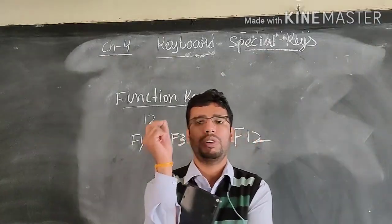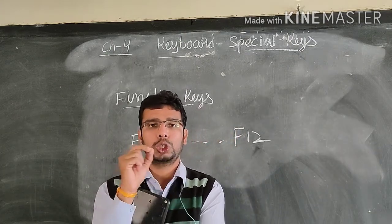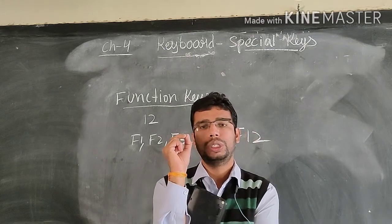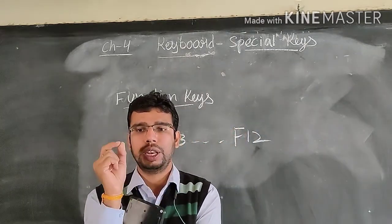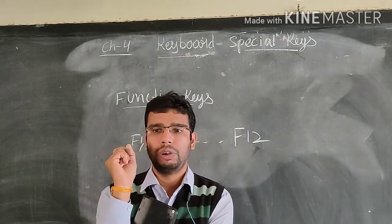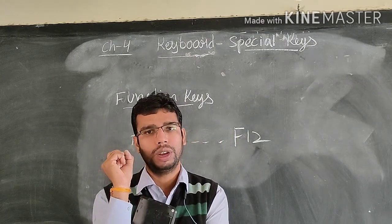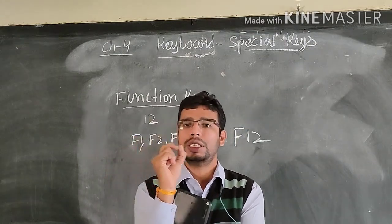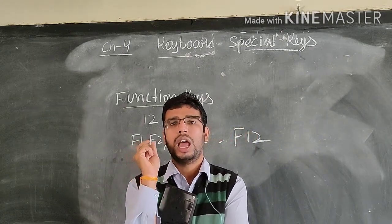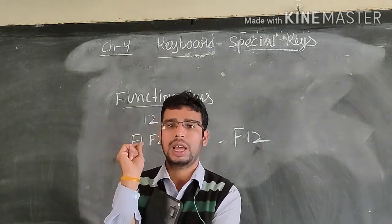They are used for different tasks. For example, F1 key is used to open the help box. F2 is used to rename a file or folder. F3 is used to search a file or folder. F4 is used to close the current program or scroll down the window. You can set the function key according to your preference, and how to set the function key will be taught in a higher class.